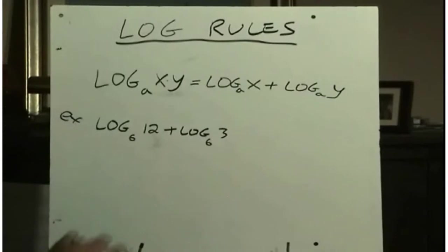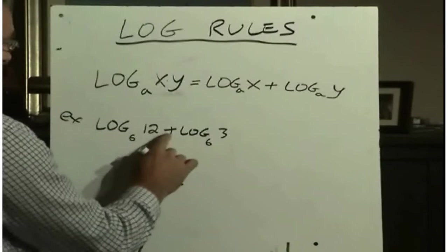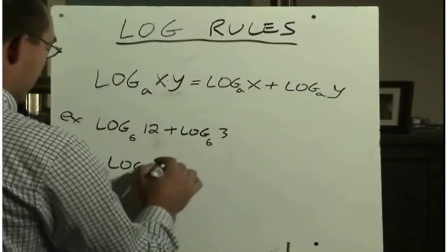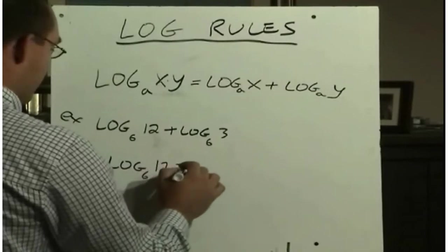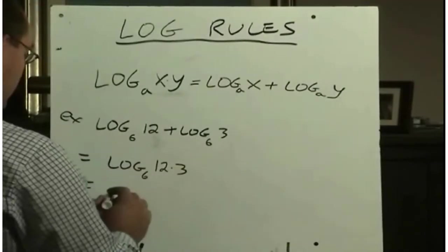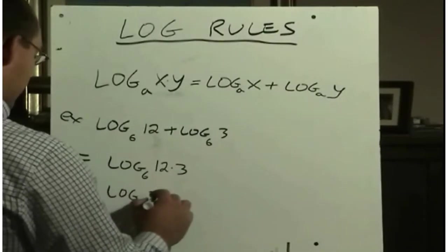Log base 6 of 12 plus log base 6 of 3. Well, using this rule, the bases are both base 6, and we are adding these two logarithms. So I can combine this to log base 6 of 12 times 3. And 12 times 3 is 36. So that would be log base 6 of 36.